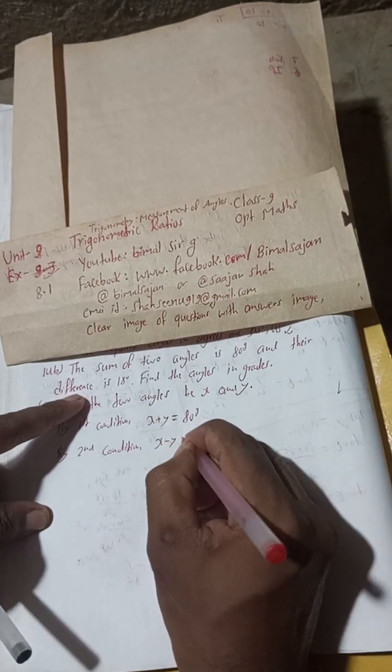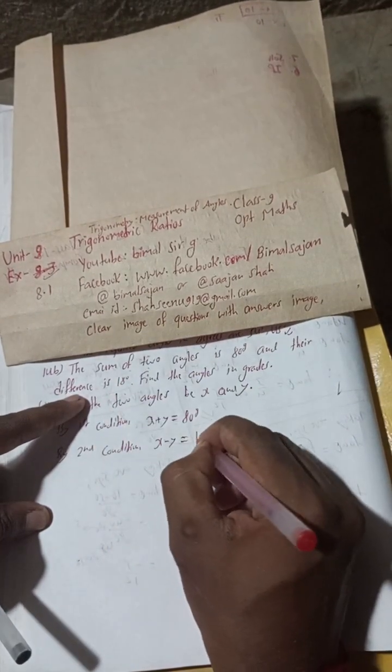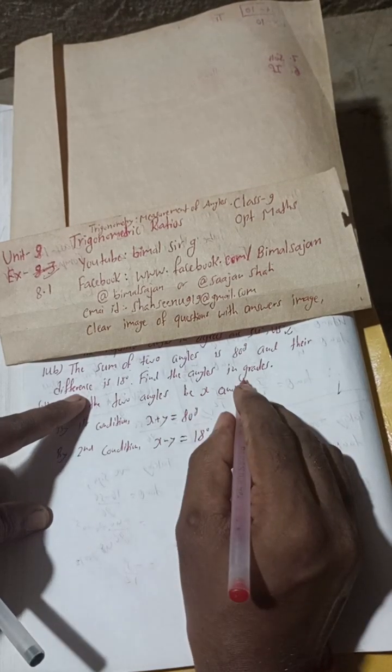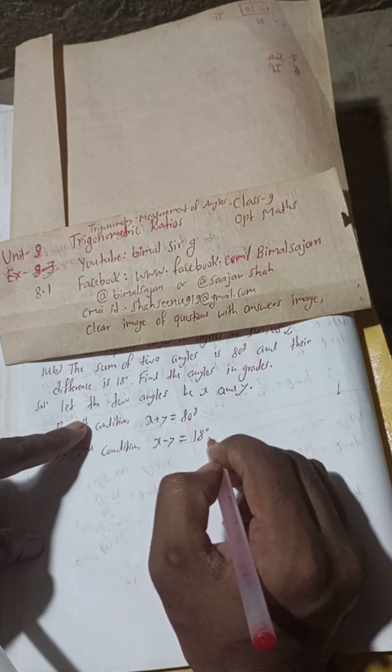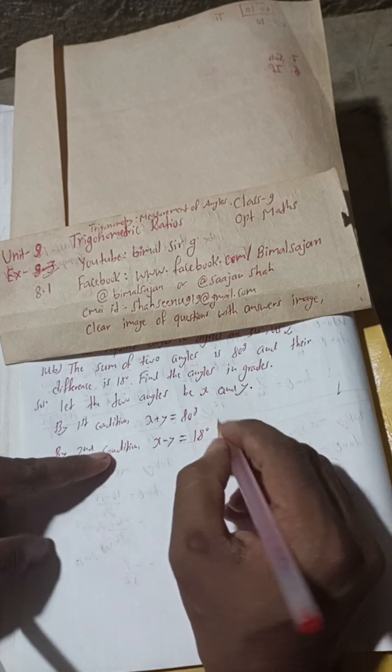The question tells to find the angles in grade, so we have to change this degree into grade. We know 90 degree is equal to 100 grade.